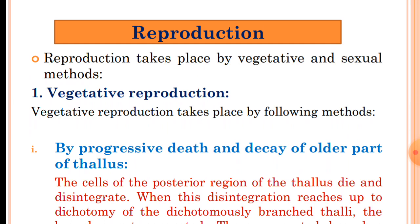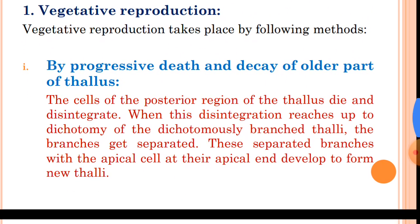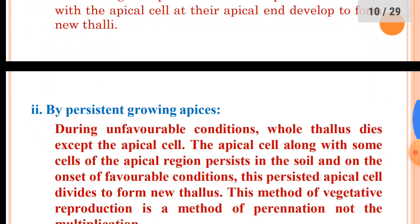Now, reproduction in Riccia. Reproduction takes place by two methods: vegetative and sexual. Asexual reproduction is lacking in Riccia. Vegetative reproduction method one is by progressive death and decay of the older part of the thallus. The cells of the posterior region die and disintegrate; when disintegration reaches up to the dichotomous region, the branches get separated. The separated branches, having the apical cell at their apical end, individually develop to form new thalli.